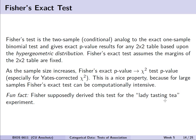One fun fact about the generation of this test: Fisher supposedly derived it for the lady tasting tea experiment, where a young woman proposed she could taste the difference between whether the tea or the milk was put in first. Fisher came up with a mini randomized experiment based on exact probabilities from a hypergeometric distribution to test that hypothesis.